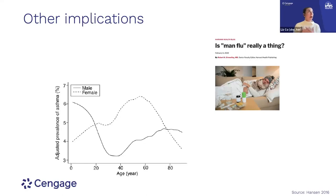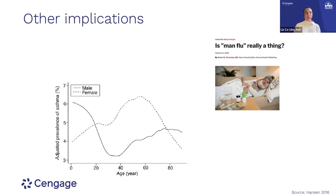I was an ardent believer in the idea that biological men were big whiners when they got sick, until we started uncovering this research. It turns out that for most infections, an individual with higher levels of circulating testosterone is likely to have more significant symptoms. So it's not about whining — it's actually about testosterone.